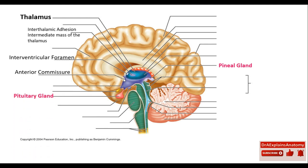This right here is the pituitary gland. The pituitary gland is the master gland in the body — it controls all other glands. This right here is the optic chiasm.